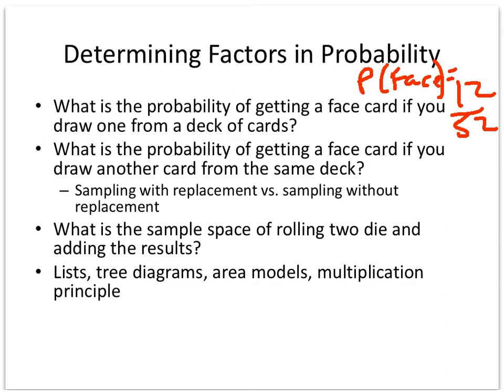There's the probability of getting a face card if you draw another card from the deck. Well, if I draw it from the same deck, remember I've already drawn a card out. So let's assume it was a face card. If the first card was a face card, there is now one less face card along with one less card. So the probability of getting a second face card would be 11 out of 51. And we call this sampling without replacement because I'm not replacing the card back in the deck. If I were doing sampling with replacement, then it would stay 12 out of 52.